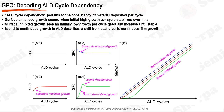Lastly, the island to continuous growth mode sees a transition from an initially low GPC, similar to surface-inhibited growth, which then increases before finally decreasing and stabilizing. This is often observed when the initial film growth occurs in a scattered, island-like manner, with the GPC increasing as the islands coalesce into a continuous film. As the film becomes continuous, the surface reactivity decreases, leading to a subsequent decrease in the GPC until it stabilizes. Each of these deviations from the ideal constant GPC reflects the complex interplay of surface reactions during the ALD process.